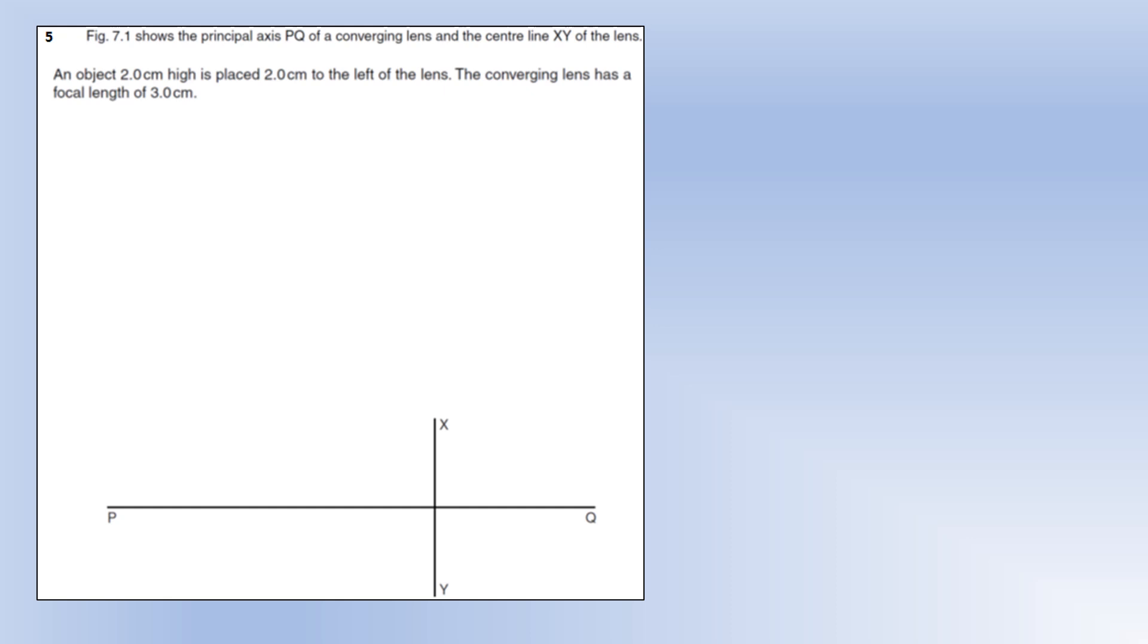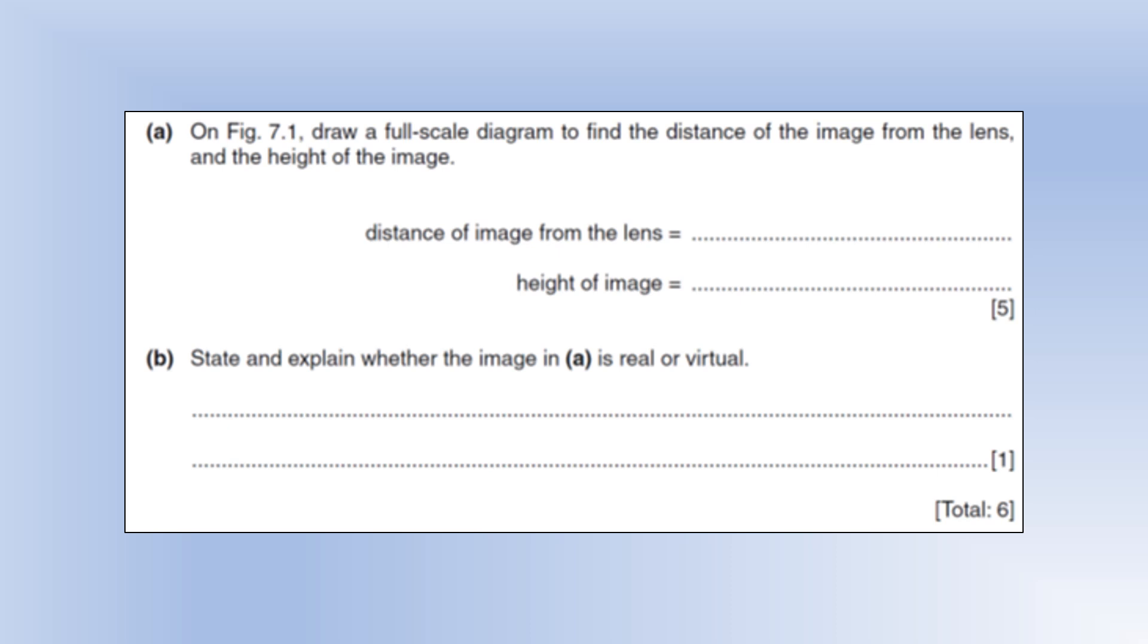So the diagram shows the principal axis of a converging lens and the centre line of the lens. So we've got an object 2 centimeters high placed 2 centimeters to the left of the lens, and the converging lens has a focal length of 3 centimeters. So we want to draw a scaled diagram to find the distance of the image from the lens and the height of the image, and then we're going to identify whether it's real or virtual.